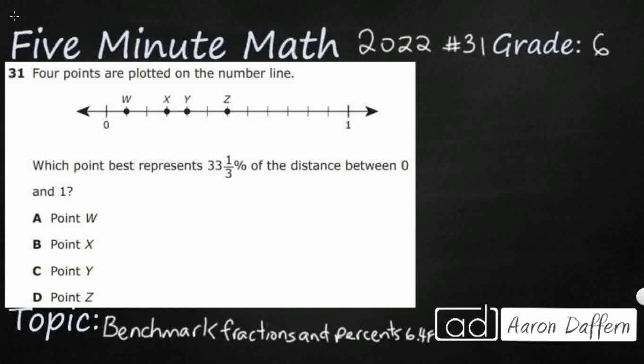So, we've got four points on a number line. We need to find which one of these is best represented by 33 and a third percent. What in the world does that 33 and a third percent mean?